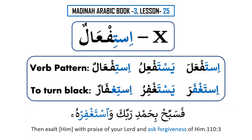In today's lesson, we will learn the last derived form of the verbs that have three root letters. The last one is called Form 10, and as we can see, there are extra letters. Those are the root letters. It is called istaf'ala, and the pattern is istaf'ala. The verb we are going to learn on this pattern is istaghfara.